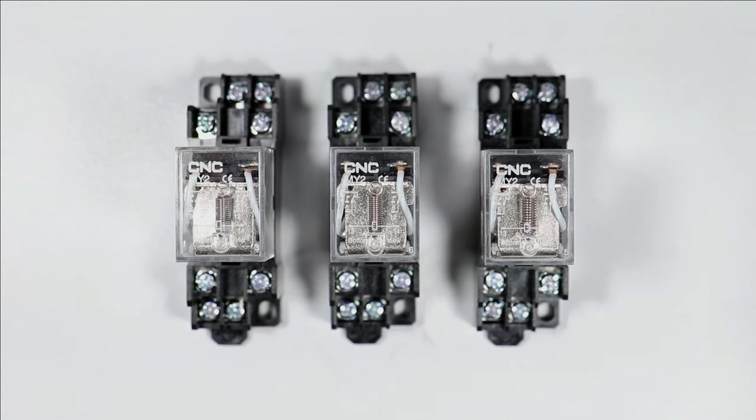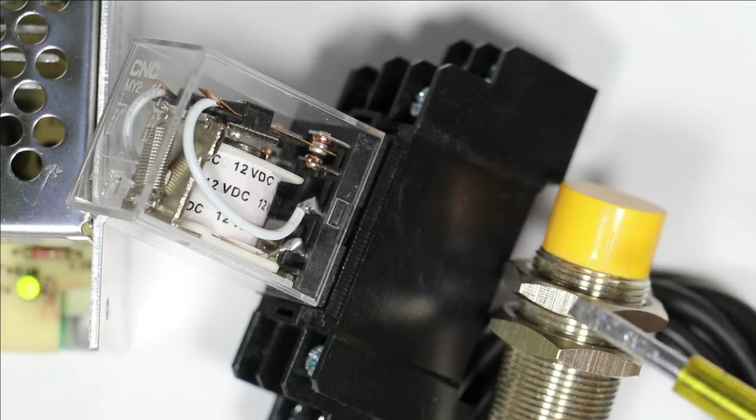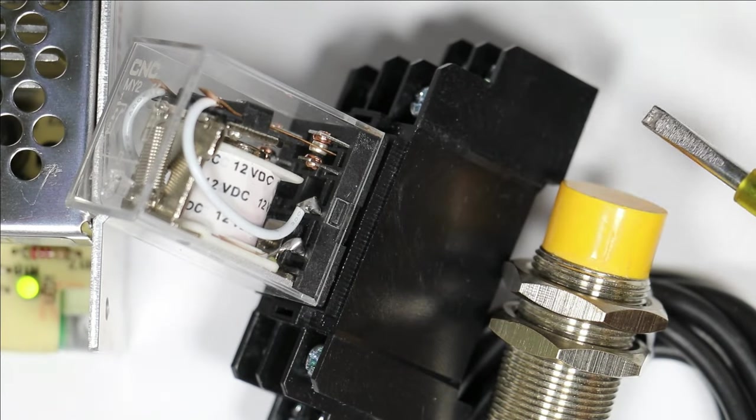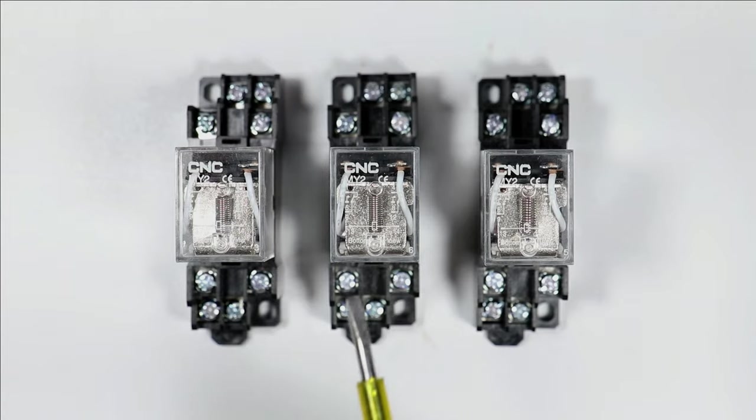Whenever a high voltage application is to be operated through low voltage, then this type of relay is needed. It means through low voltage we will turn on and off this relay, and this relay will further turn on and off high voltage applications.